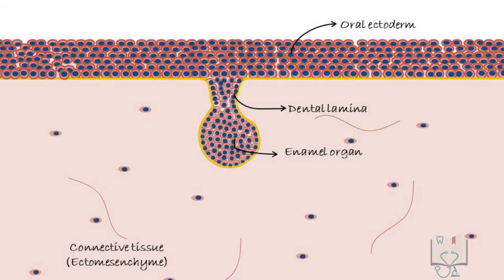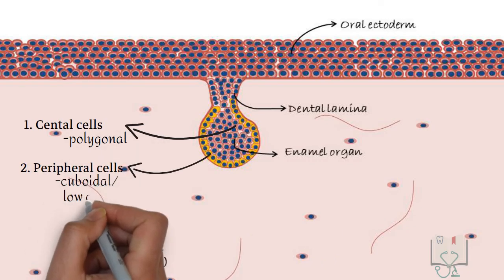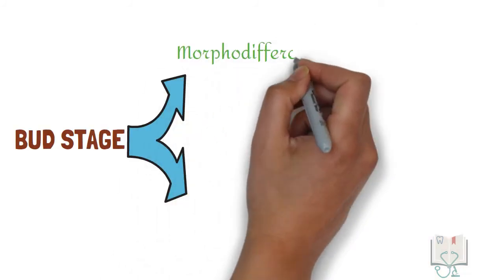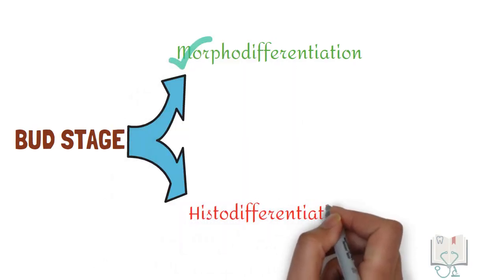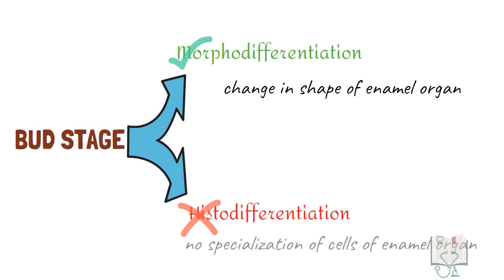Like all epithelial structures, a basement membrane separates the enamel organ from the surrounding ectomesenchyme. Only two types of cells are seen in the enamel organ during the bud stage: central cells, which are polygonal in shape, and peripheral cells, which are cuboidal or low columnar in shape. Thus, in this stage, morpho-differentiation of the enamel organ is seen but no histo-differentiation is seen, meaning a change in the shape of the enamel organ is noted but specialization of its cells is yet to occur.